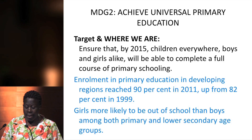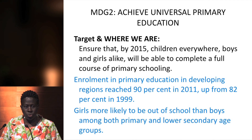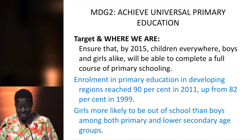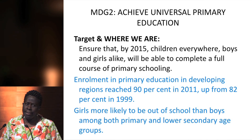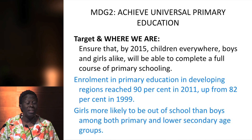MDG II was supposed to achieve universal primary education. The target was to ensure that by 2015 children everywhere — girls and boys — would be able to complete a full course of primary education. Enrollment in primary education in developing regions reached 90% in 2011, up from 82% in 1999. Unfortunately, girls are more likely to be out of school than boys, especially in poor countries where they are required to do domestic chores, which lowers their entry into secondary school.